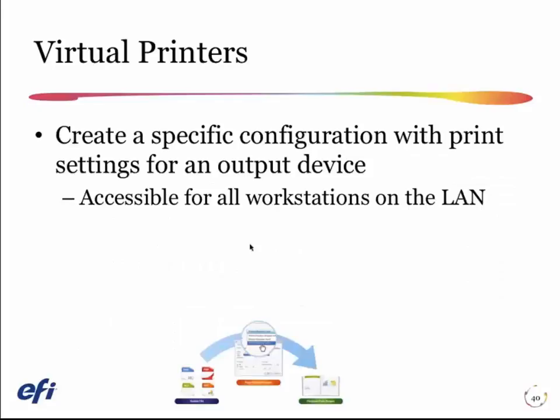The third way to automate this is with a virtual printer. Virtual printers are essentially network printers that have a specific set of job properties associated with them. This is really good if you have what we sometimes call a Control-P workflow — a number of users on your network who print to the Fiery from their applications by pressing Control-P or Command-P, or choosing print from the file menu. They're not typically going to Command Workstation to change settings or making PDFs to drop on a hot folder. So the natural way to get them the right settings for each paper is to put a couple of virtual printers on the network.